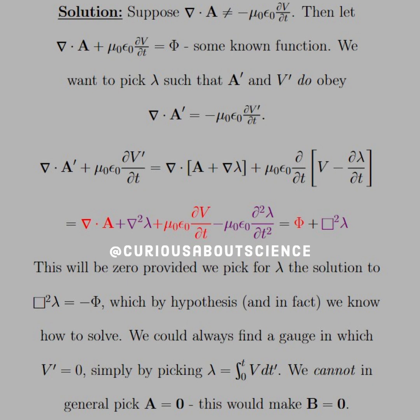We cannot in general pick A equals zero. This would make B equals zero, since the curl of A, which would be the curl of zero, gives you zero.